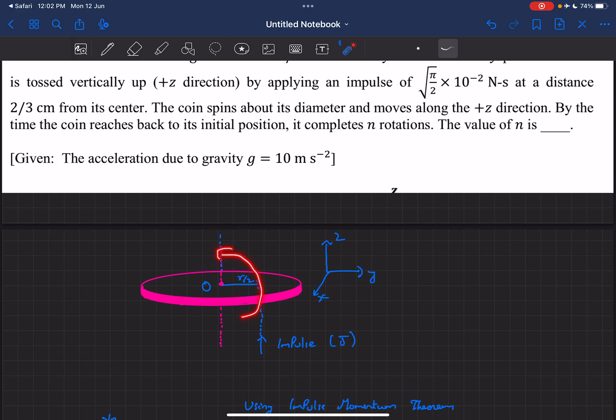The coin is going to rotate about this axis and also translate up with some velocity v. We are required to find the number of oscillations n that the coin will complete before it comes back to its original position.